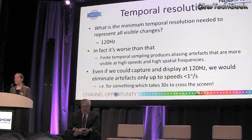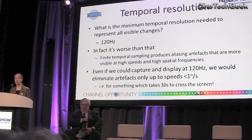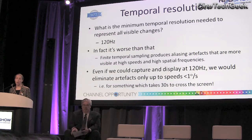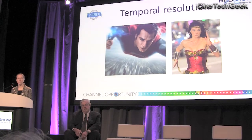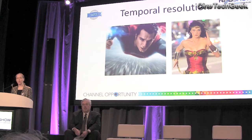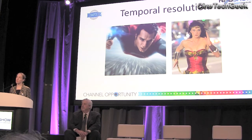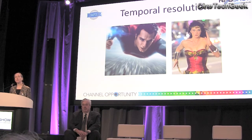Even if we could capture and display content at 120 Hz, we would eliminate all artefacts only up to speeds of around one degree per second — which is really slow. SMPTE reckons the screen subtends up to 10 to 30 degrees, so we're talking about an object that moves from left to right of the screen in half a minute. People get around it by avoiding high spatial frequencies in moving content — you track the object of interest, so rapidly moving backgrounds get blurred either by finite exposure times or by finite depth of field. That's a workaround, but it means you haven't reproduced reality.